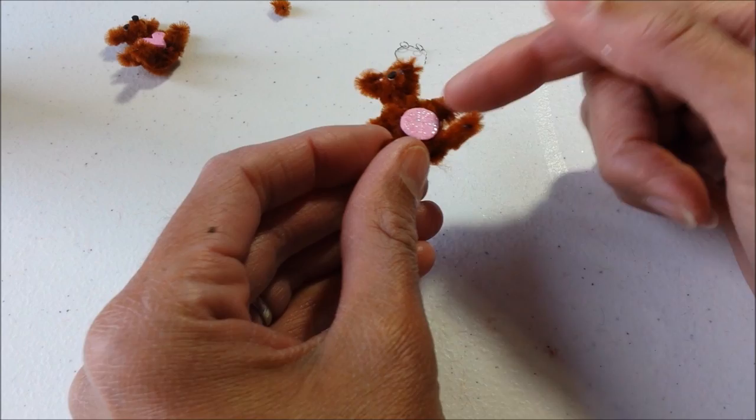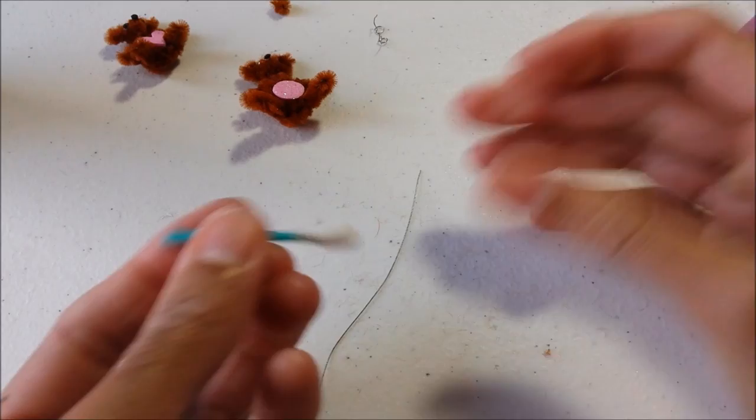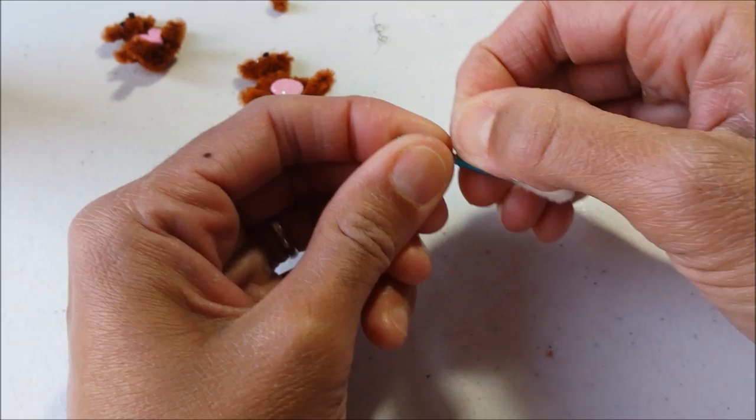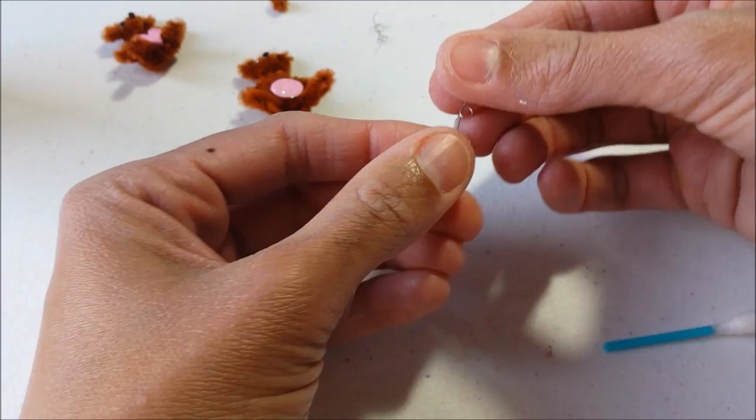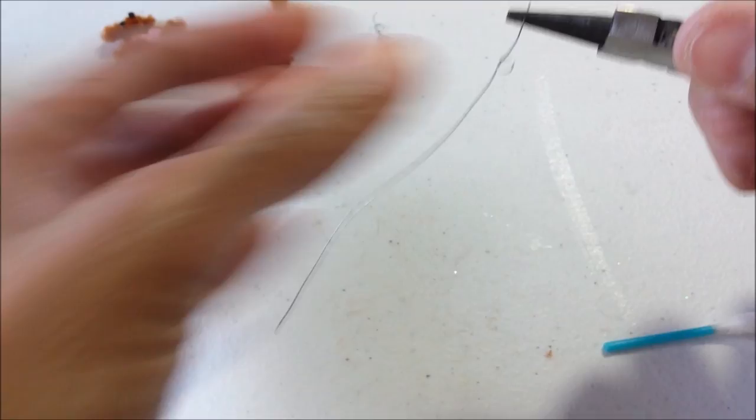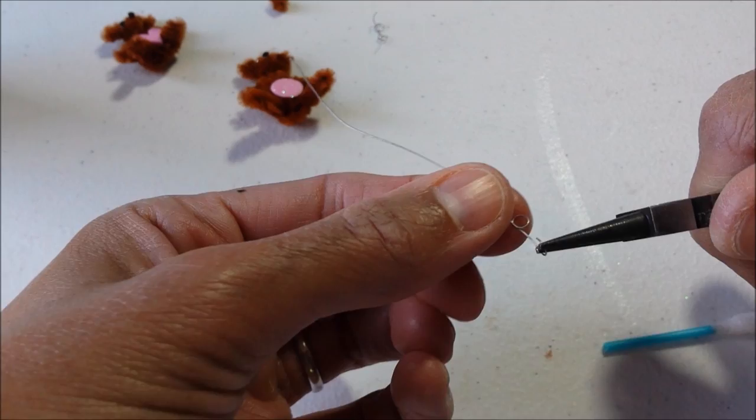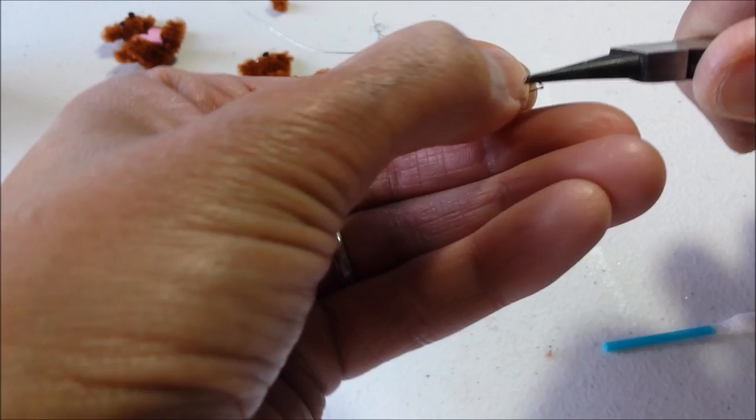And then just to make these little glasses, cut off one end of a Q-tip. Shape one side just by wrapping it around. And take your needle nose pliers, or tweezers, and bend so that you can then weave it back through this hole here.